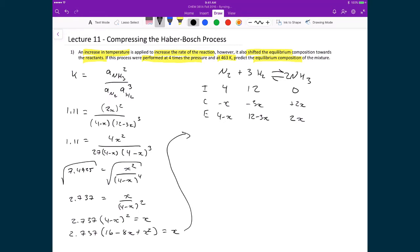I'm going to distribute in the 2.737 and I'm going to move this x over to the left hand side. And so what I'll get is 43.792 minus 21.896x plus 2.373x squared minus x and that's equal to 0.